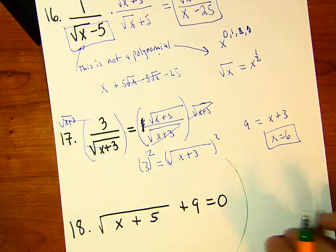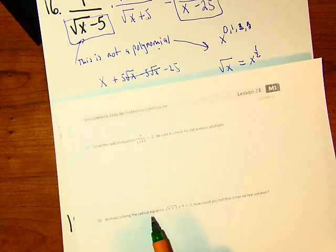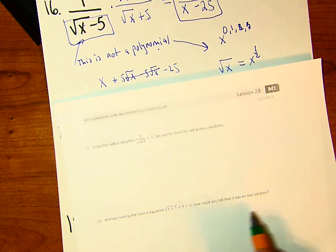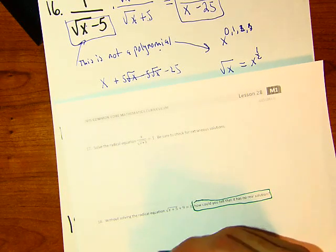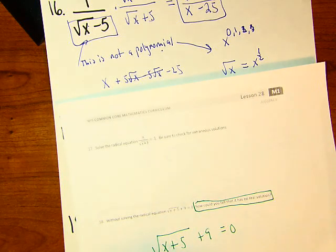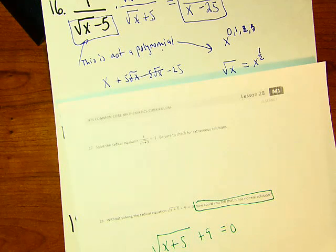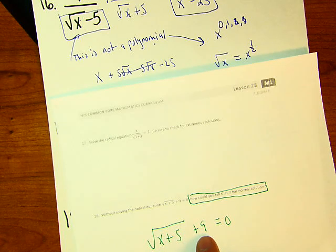Problem 18 asks: without solving, how can you tell that square root of x plus 5 plus 9 equals zero has no solution? This is a really good question. You can tell there's no solution because you have a positive 9 here.